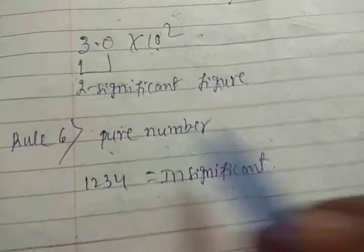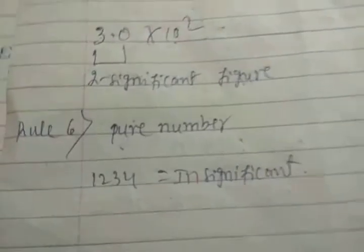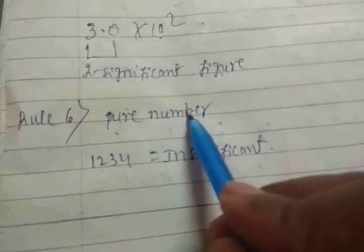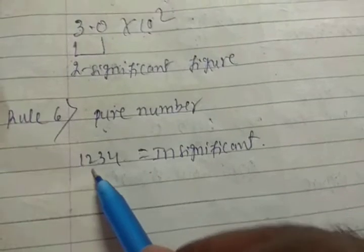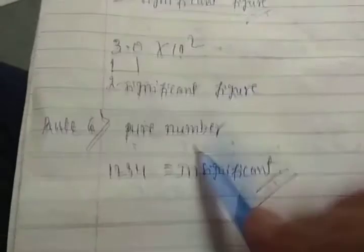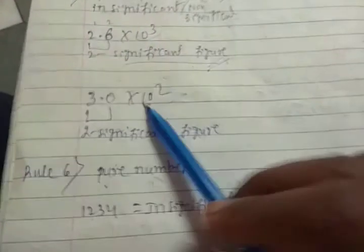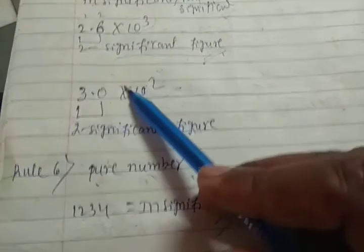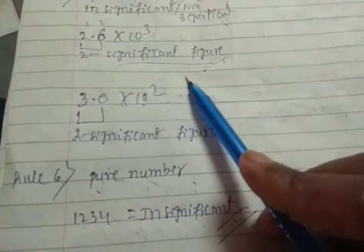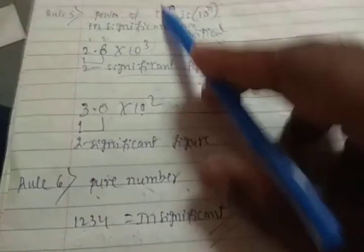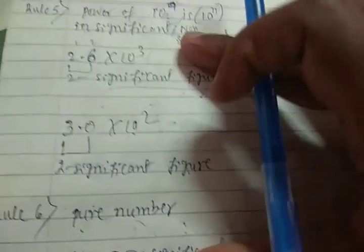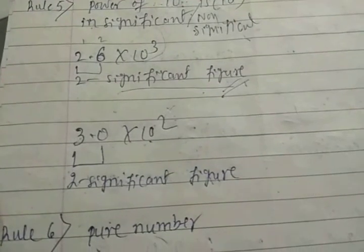Pure numbers: if a pure number exists, such as 1, 2, 3, 4, 5, 6 or 1434, with no zeros involved, these are non-significant in context. We discussed these rules because in the Class 11 Science syllabus, exam questions often ask how many significant figures are present in a given number. These examples cover the key rules. I hope you understood.